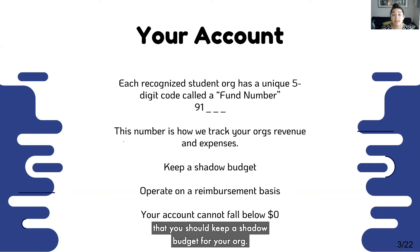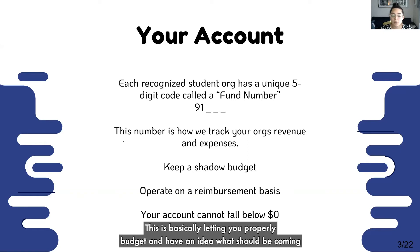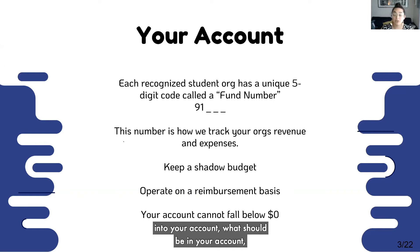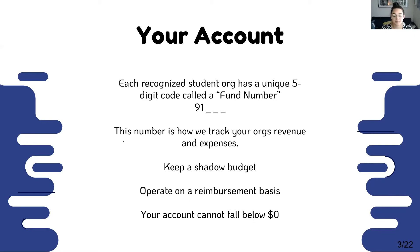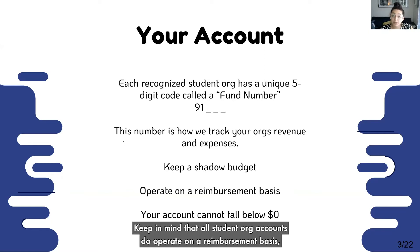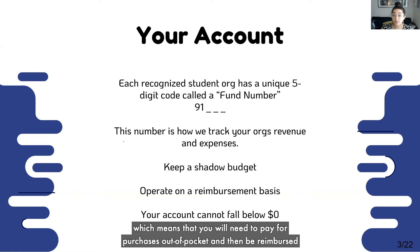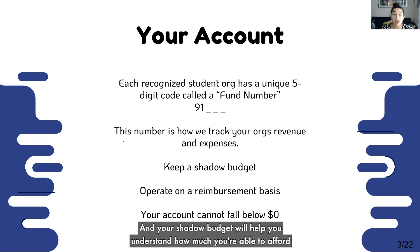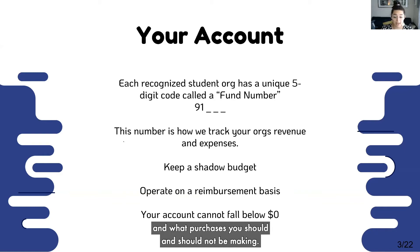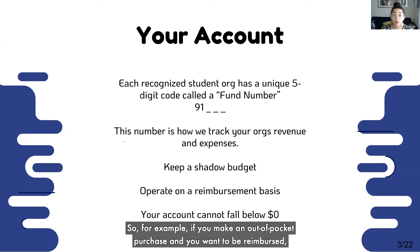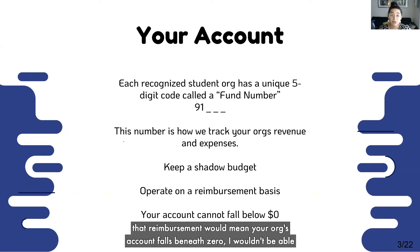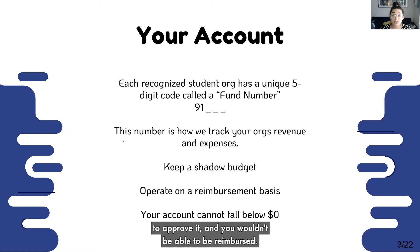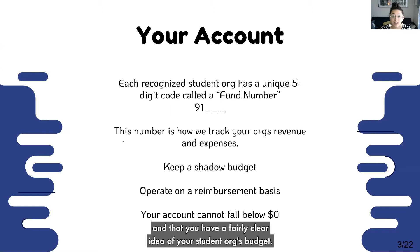Some really important things to keep in mind: you should keep a shadow budget for your org. This lets you properly budget and have an idea of what should be coming into your account, what should be in your account, and what expenses you have for the future. Keep in mind that all student org accounts do operate on a reimbursement basis, which means you will need to pay for purchases out of pocket and then be reimbursed with the funds in your student org account. Your org account cannot fall beneath zero, and your shadow budget will help you understand how much you're able to afford and what purchases you should and should not be making.